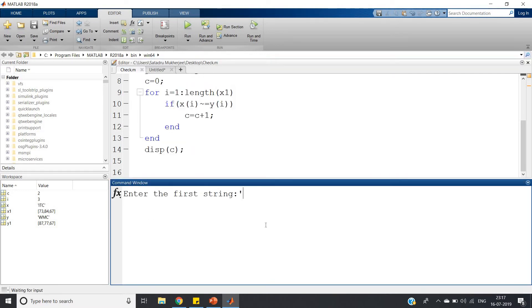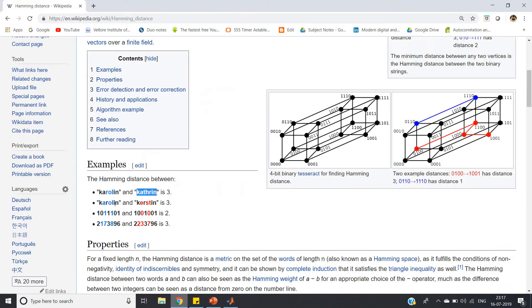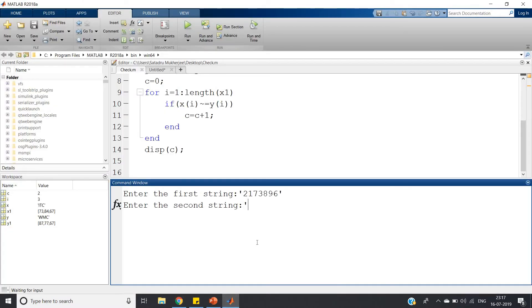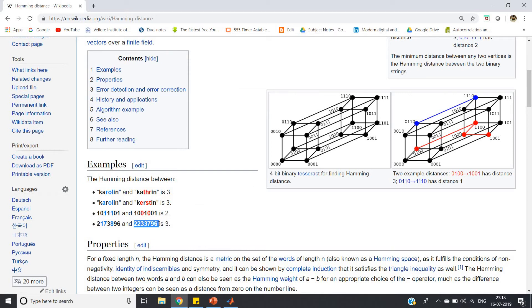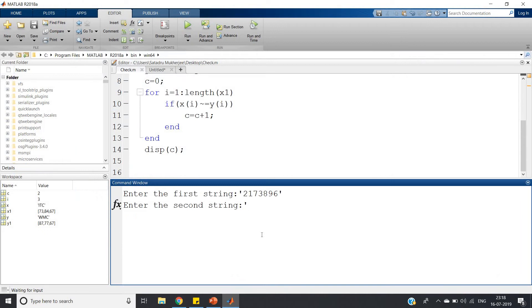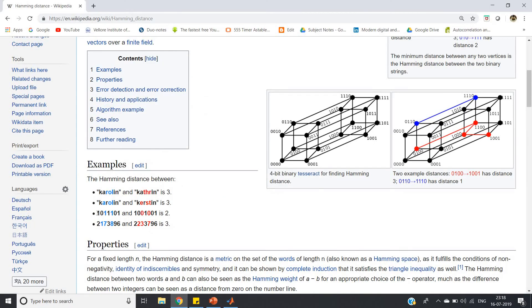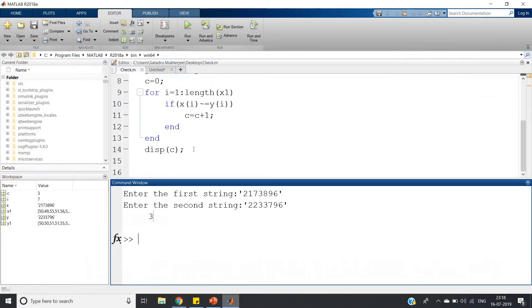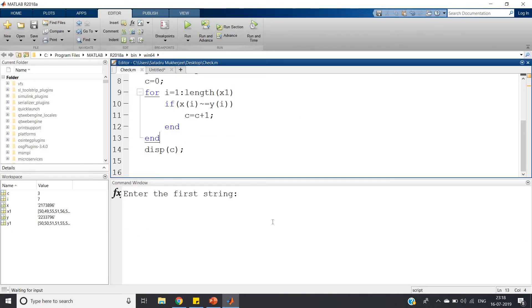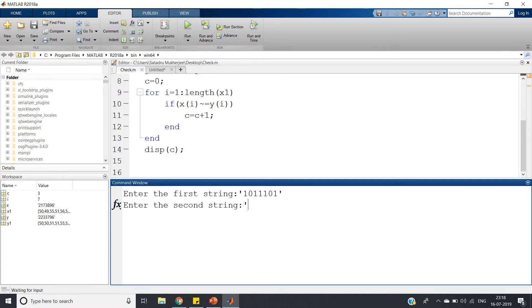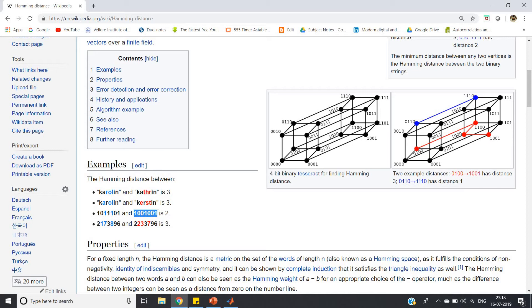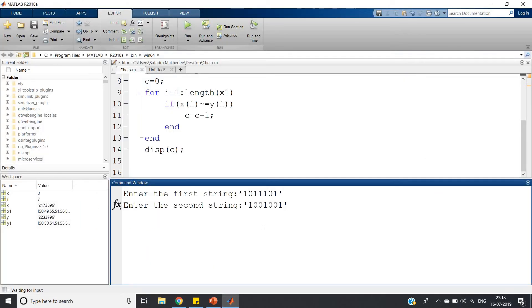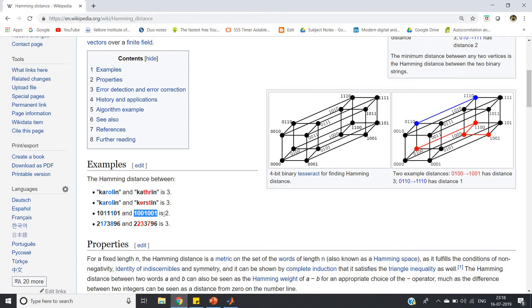Now one more case - let us check for integers. But integers also we will treat as string, so we will provide inside single quotation. Let me take this particular integer, control C and paste here, control V, enter. And the second one, let us take from the Wikipedia second example, control C and here paste control V, enter. See output is three - so basically there are three mismatches. You can similarly check for this particular example. Hamming distance is two.